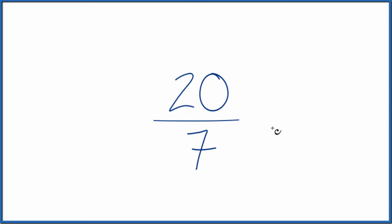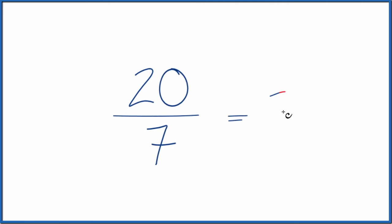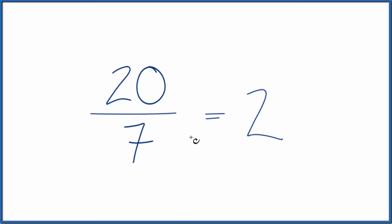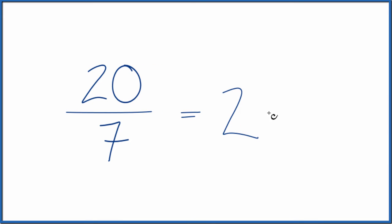We take 20 divided by 7, so 7 goes into 20 just two times because 2 times 7 is 14, and so we have 6 leftover. 20 minus 14 is 6, so we have a remainder of 6.